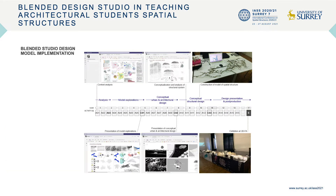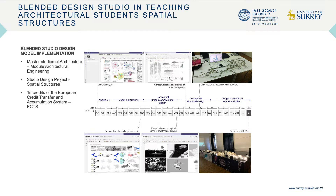The blended studio design model was implemented at Master Studies of Architecture, module Architectural Engineering. The studio design project on spatial structures has 15 ECTS credits. It is designed for up to 16 students, and its outcomes are in accordance with A and B criteria at Part 2. The course was implemented during the fall semester of academic year 2019–2020.